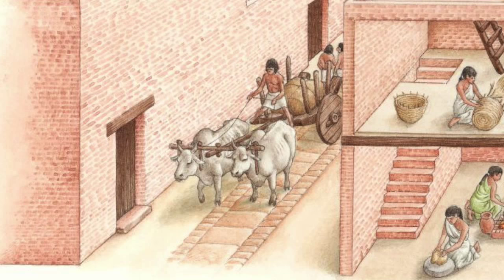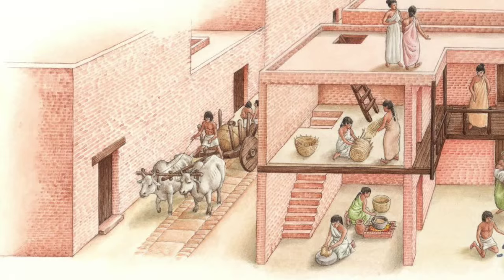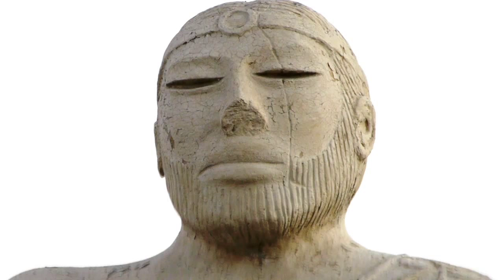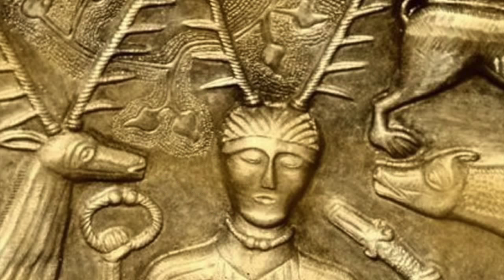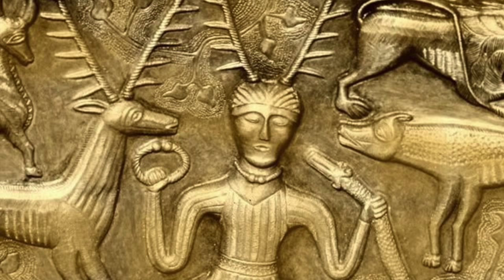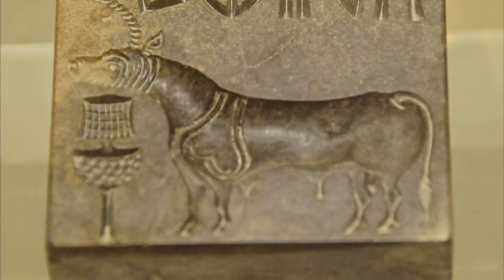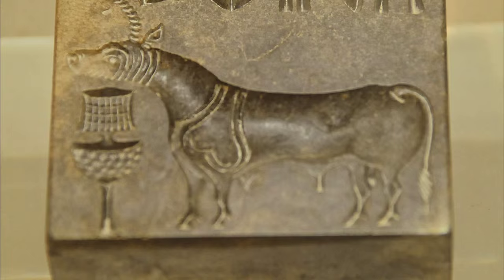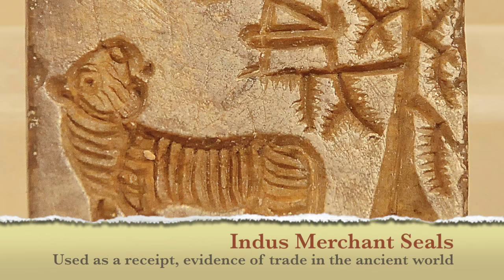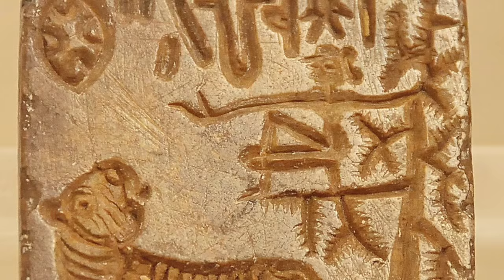These cities were also major centers of trade. Indus merchants traveled to other civilizations like Mesopotamia and Egypt to buy and sell goods such as spices, fabric, and precious stones. We know about this trade because Indus merchants used clay seals as a sort of ancient receipt — when you purchased something from them, such as a bull, you got the seal as proof of purchase. Archaeologists have found these seals in other places far away from the Indus Valley — proof of the first international trade in the ancient world.